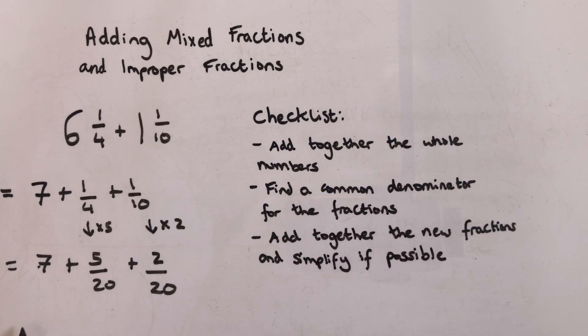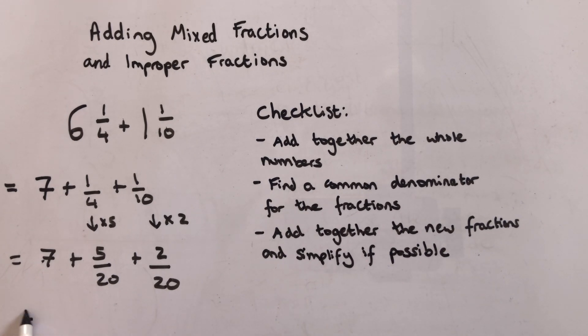Then I add together the new fraction, so this is going to be seven plus seven twentieths, and that's going to be my final answer because I can't simplify anymore, so I can just write it as seven and seven twentieths like this.